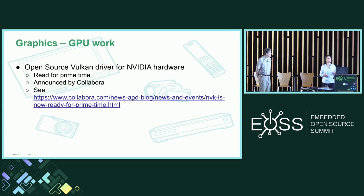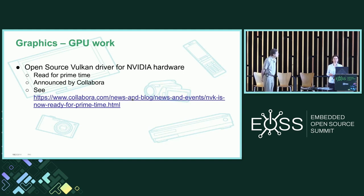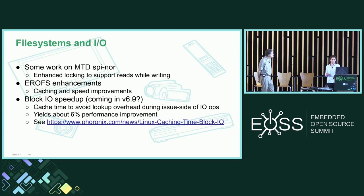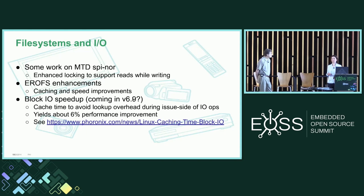On the graphics side, we can see an open-source Vulkan driver for NVIDIA that has been announced by Collabora — they have an article about this you can look at. On the file system and IO side, there is work on MTD-SPI-NOR, specifically locking work to support reads while writing, which could be interesting for embedded use cases. There is also AeroFS enhancement on caching and speed, and block IO speedup work — we haven't checked if that last one has been merged.